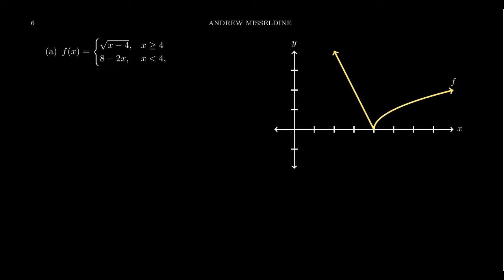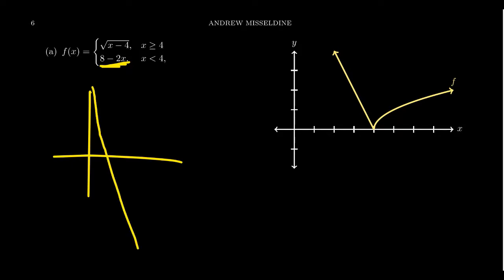Finding the domain of a piecewise function is relatively straightforward because they're telling you what the domain is — they have to, since the ambiguity cannot survive for a piecewise function. But questions of the range can be very challenging, because when you look at 8 minus 2x, this would look like a line decreasing with slope negative 2, whose domain and range are all real numbers. But when you look at the graph of f, its domain is not all real numbers.